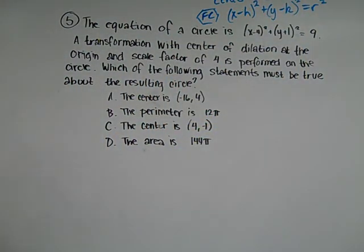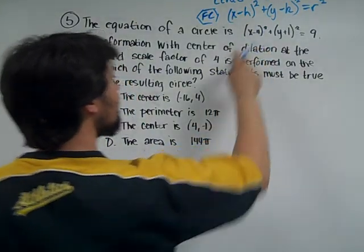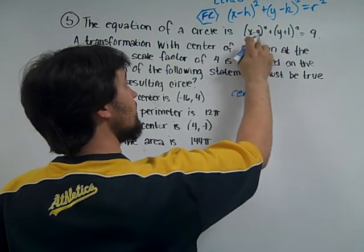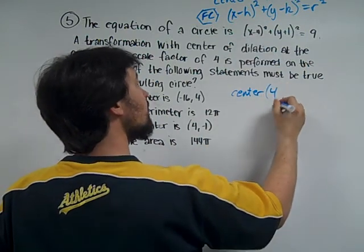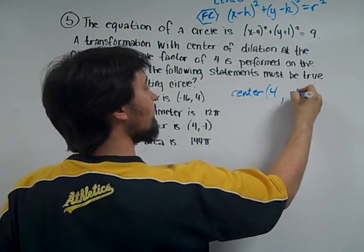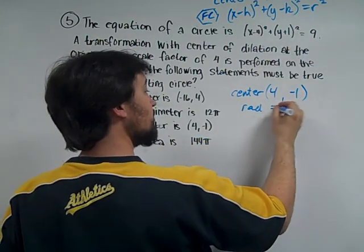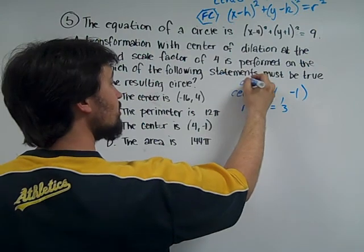So applying it to this question, our center is 4 and the opposite of 1, so negative 1. And the radius was 3. Again, this is for the old shape.